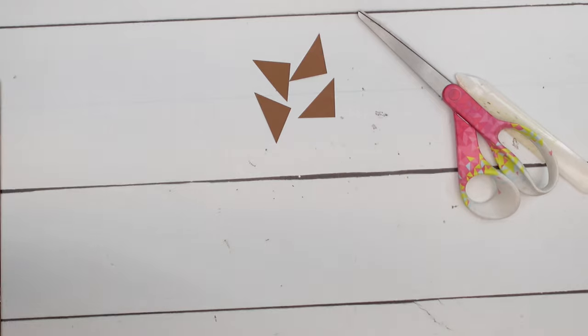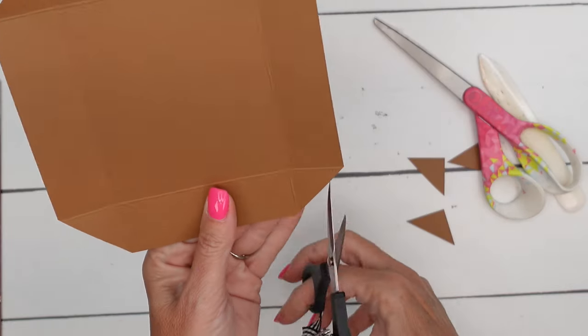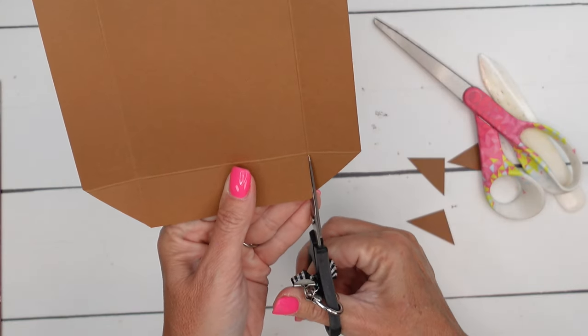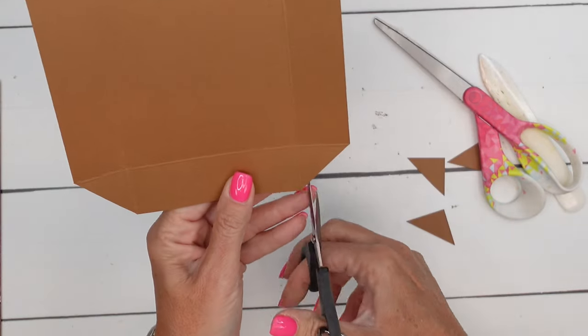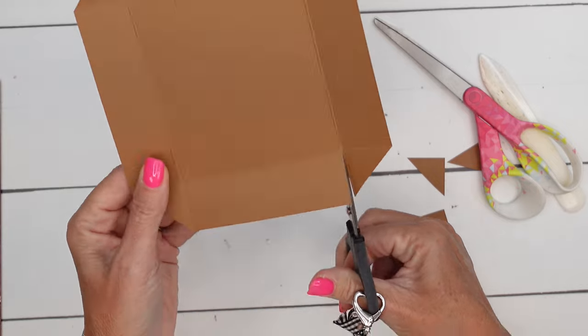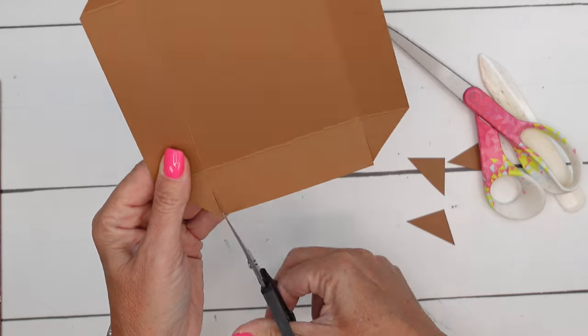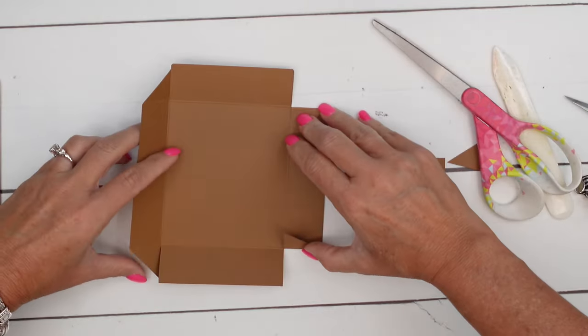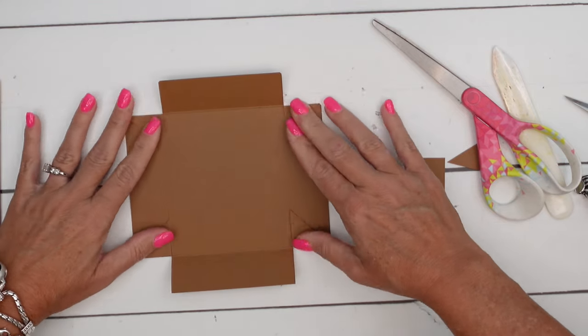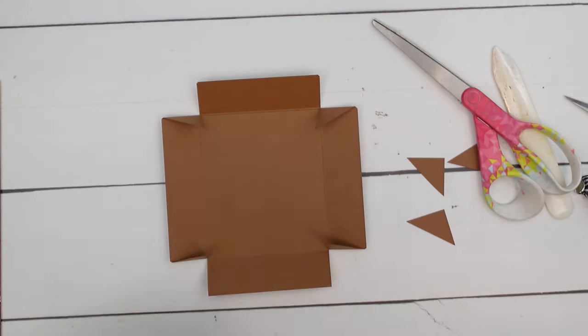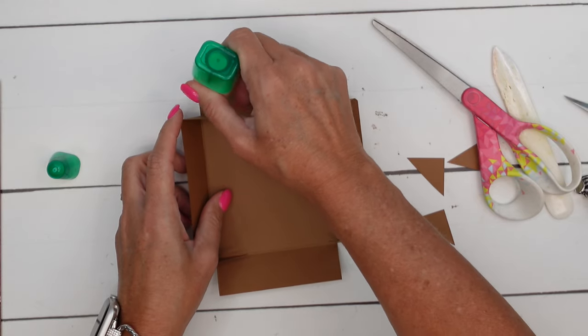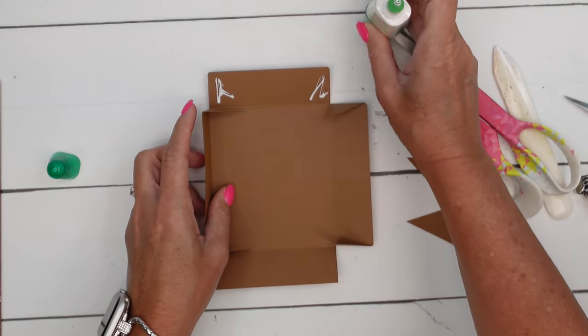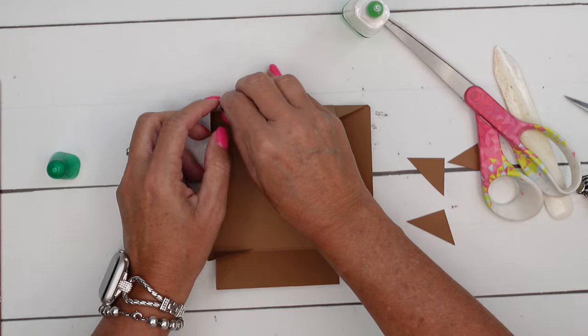Burnish those lines. Cut off your corners. And then cut those score lines coming up from the bottom. And then once again, we're going to fold those in and add some glue. Get your trusty clothespins.